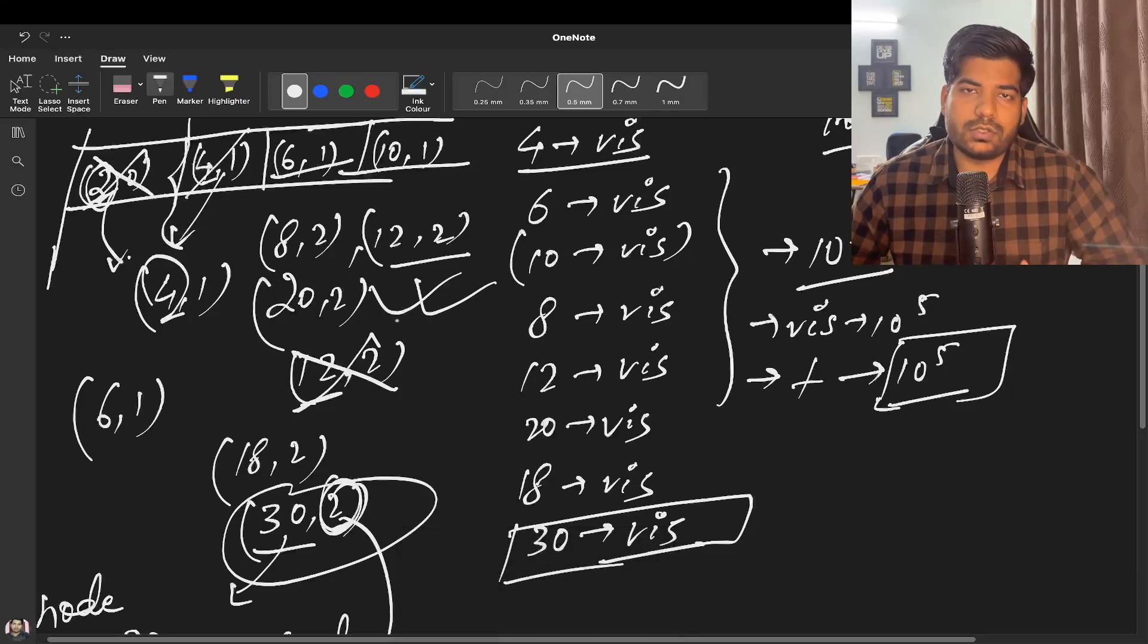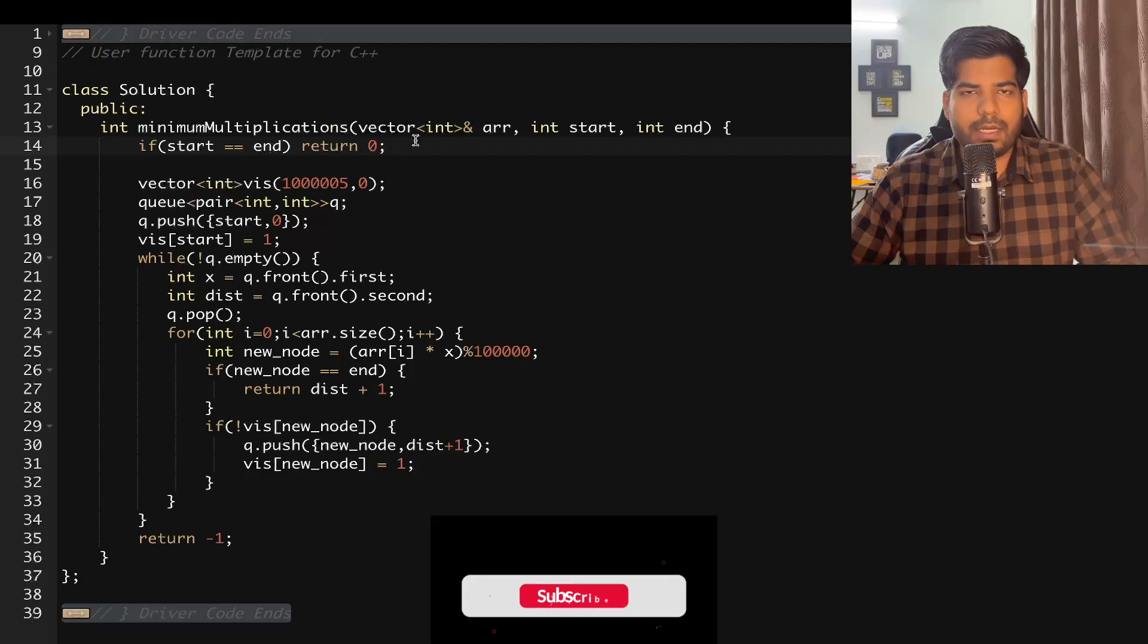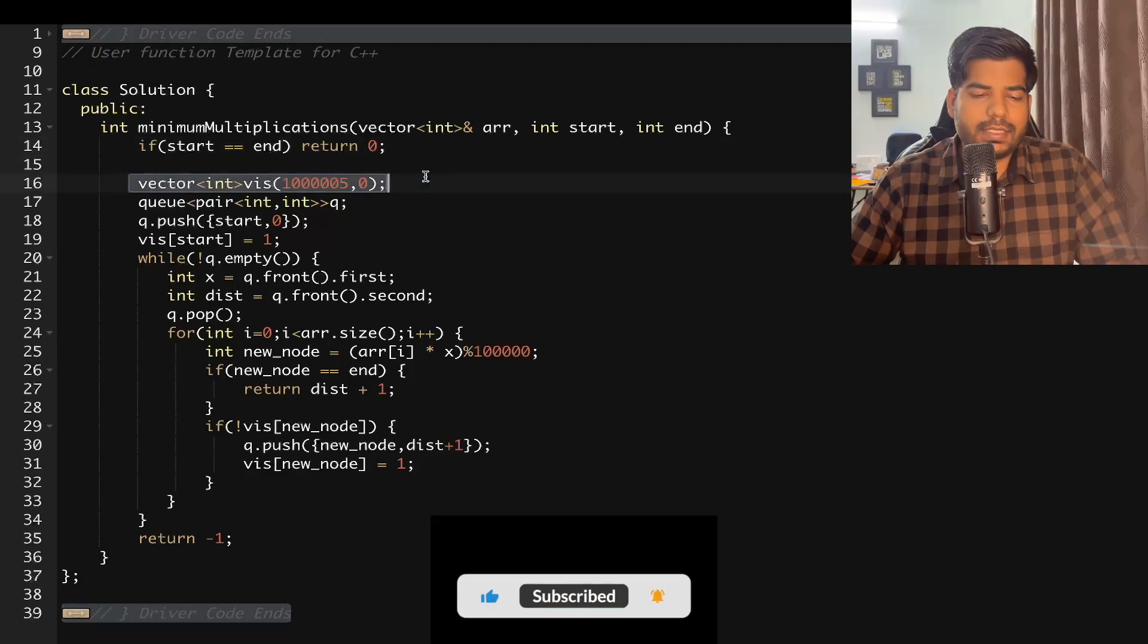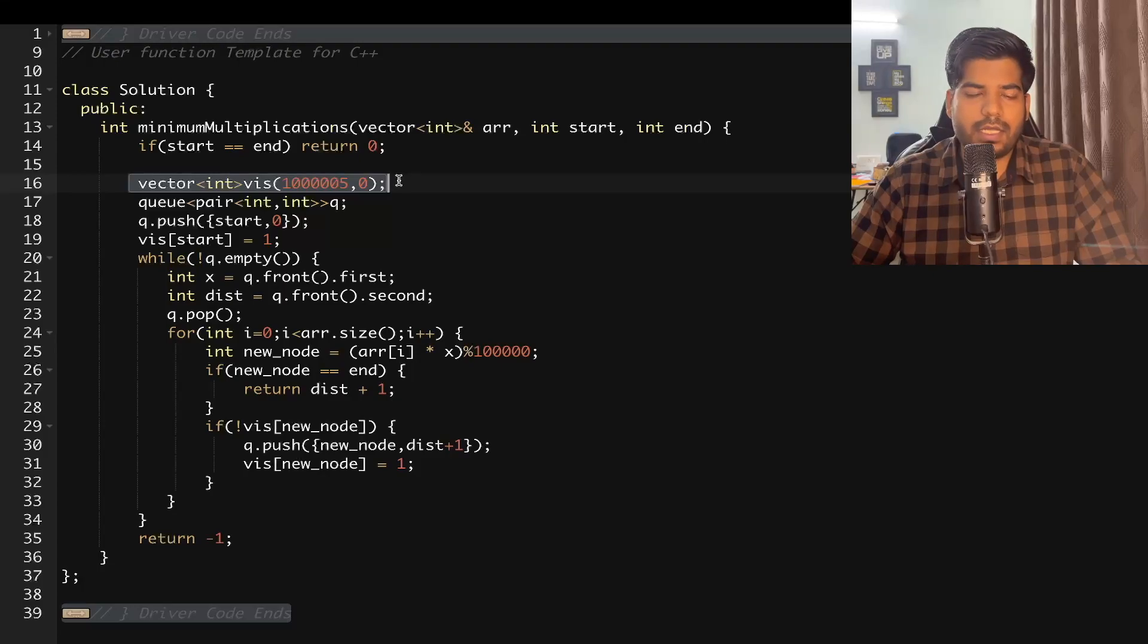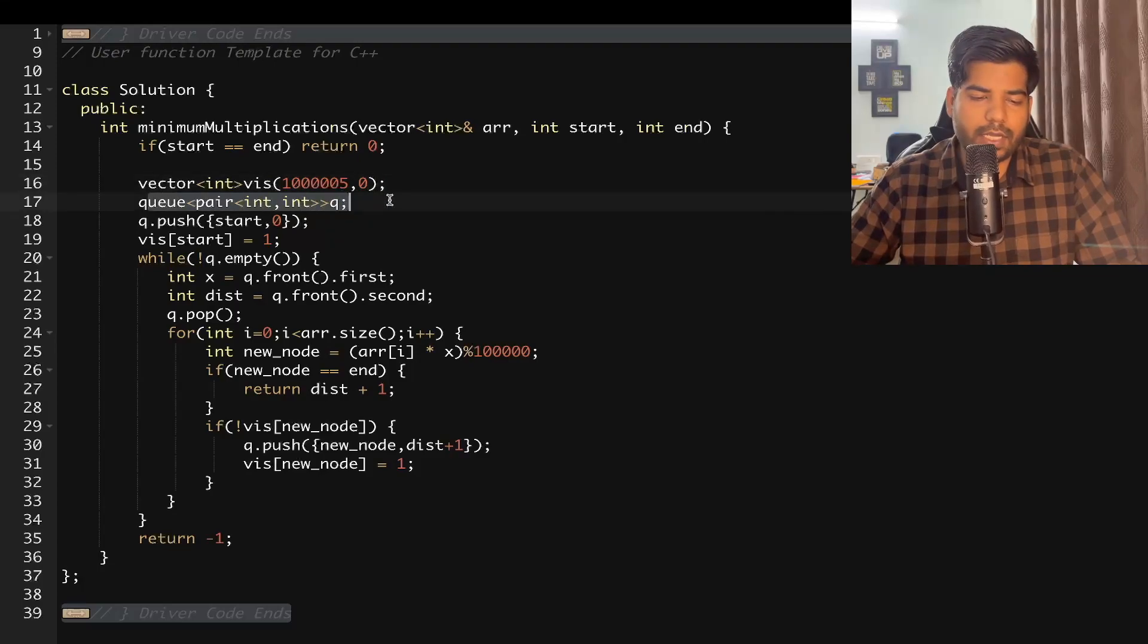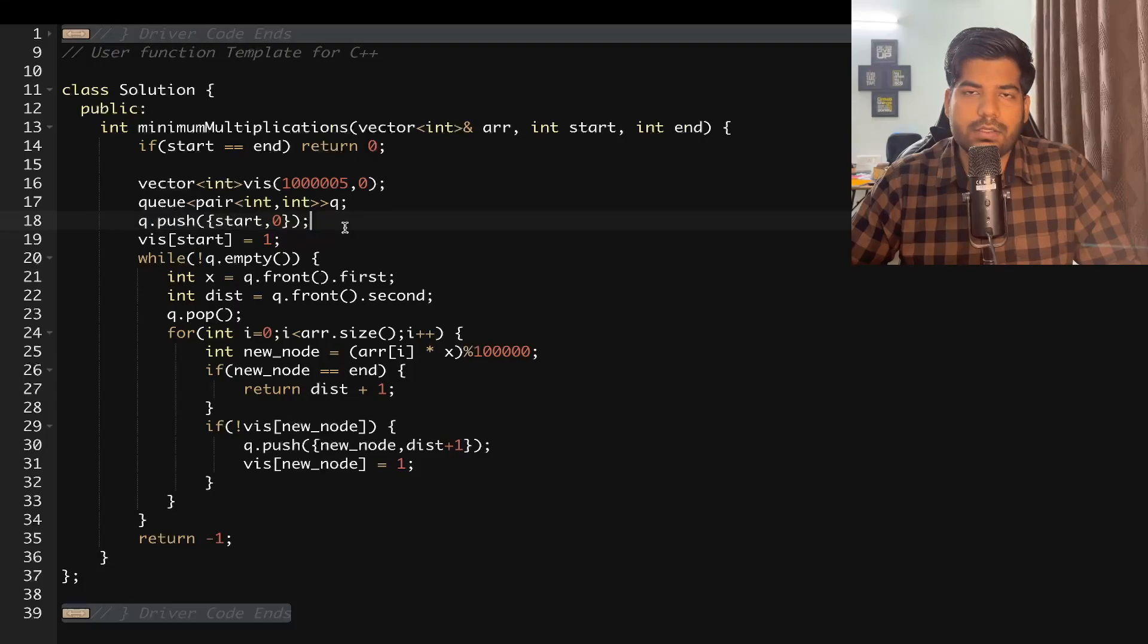I hope you have understood the approach and the time and space complexity. Let's discuss the implementation. First of all, there is a corner case: if start and end are equal, we need to return zero. The second case is that we will be taking a visited vector. Initially we assume we have this number of nodes, and initially all can be marked as unvisited. We will be taking a queue which will be of type pair of int, int.